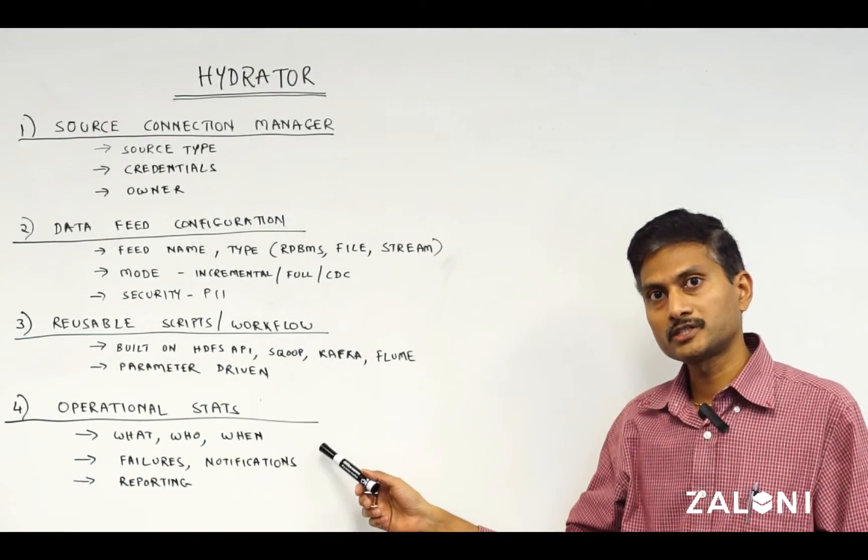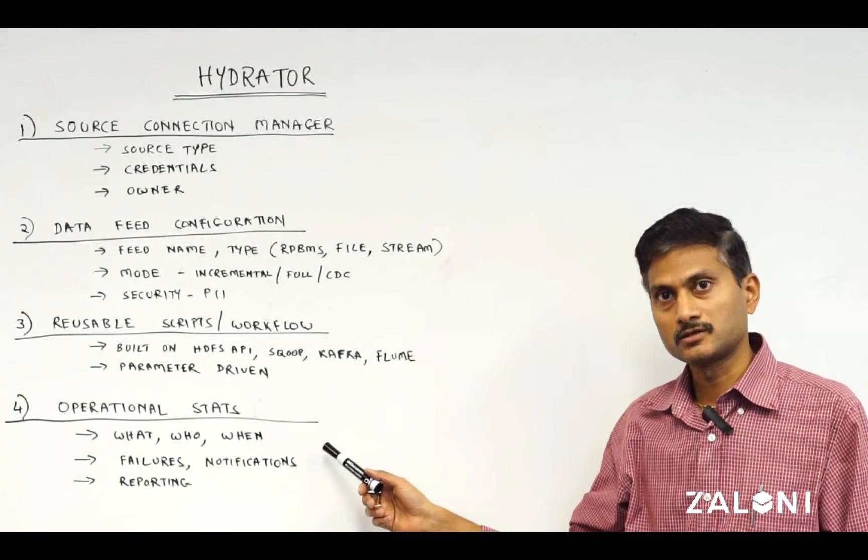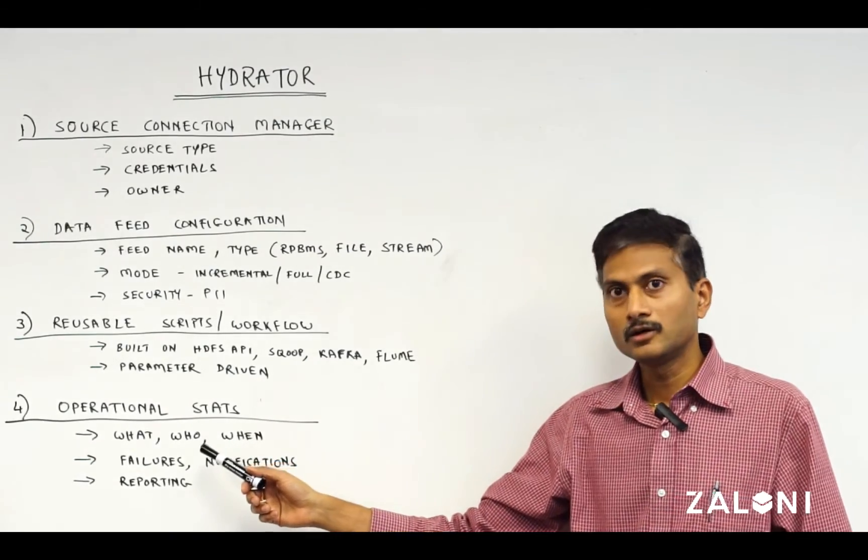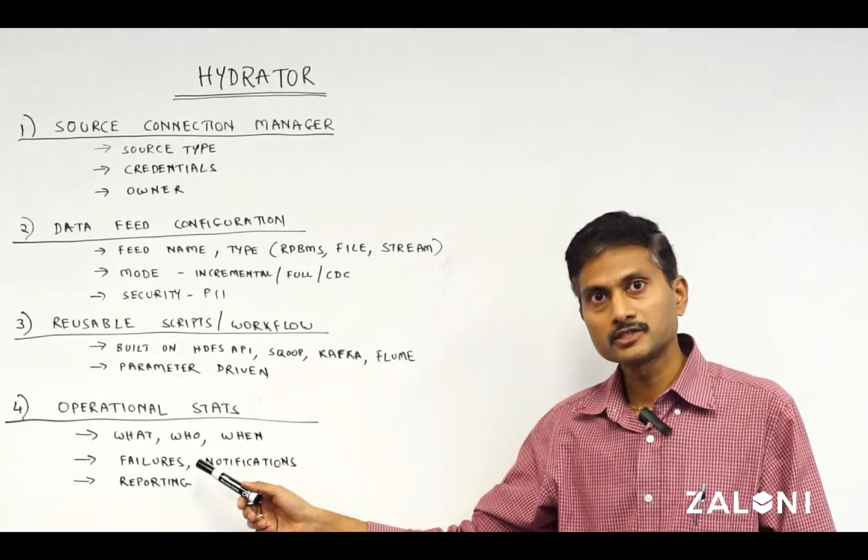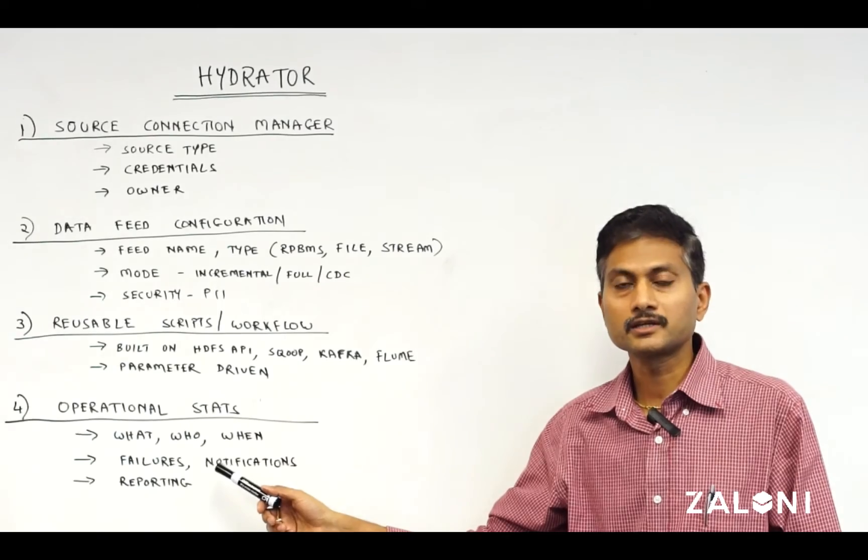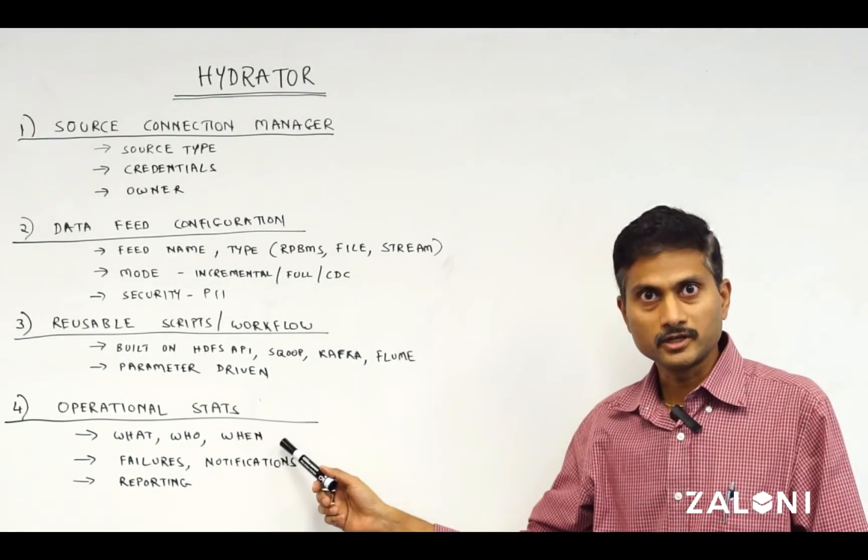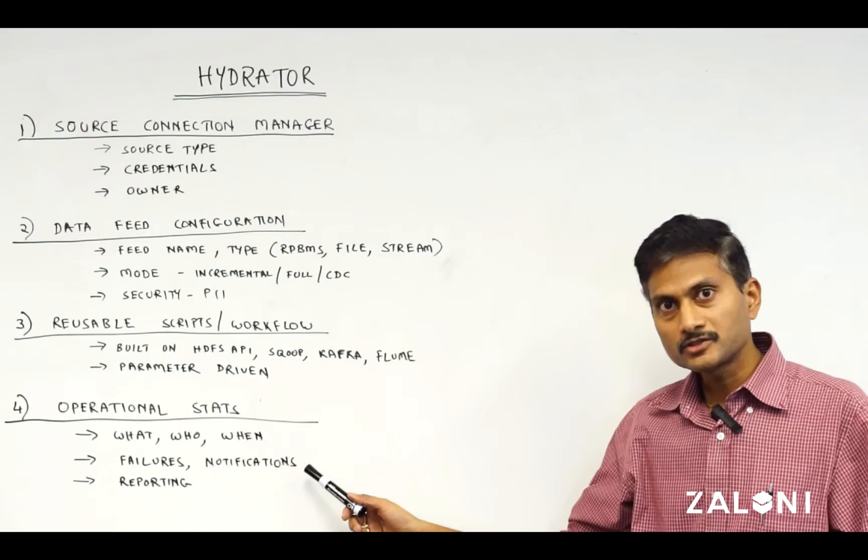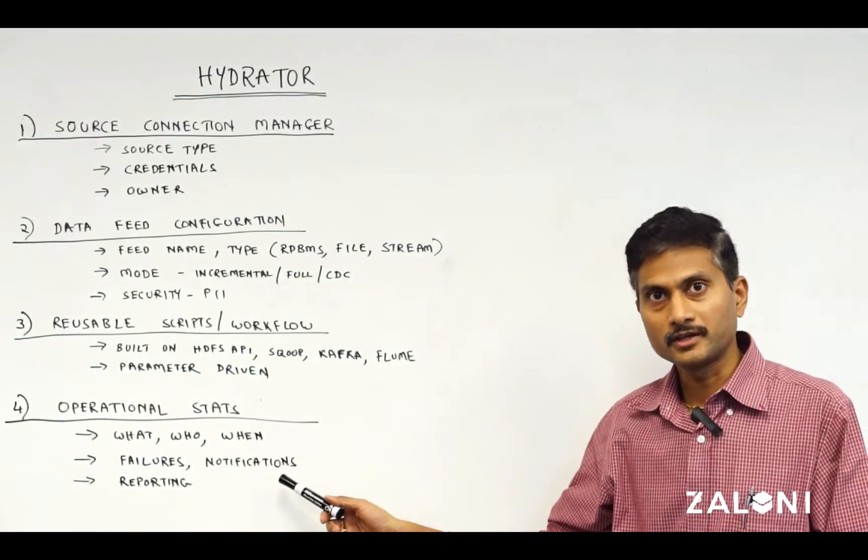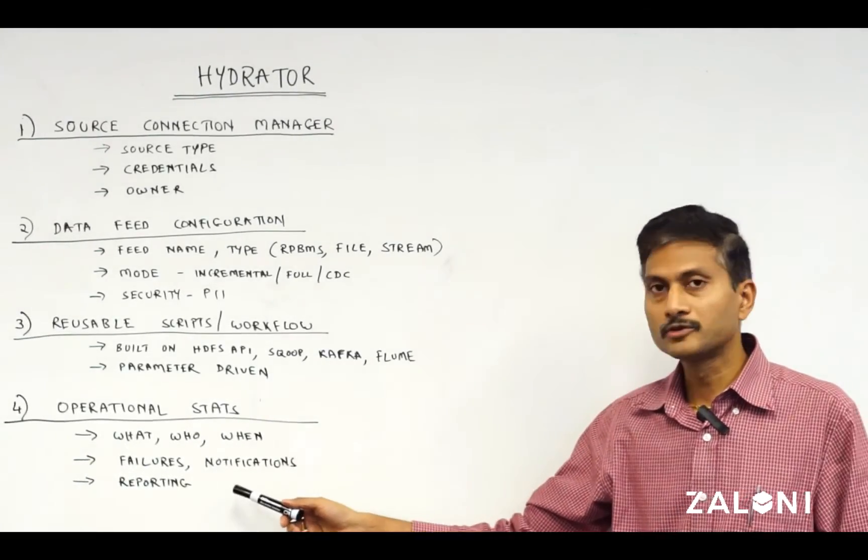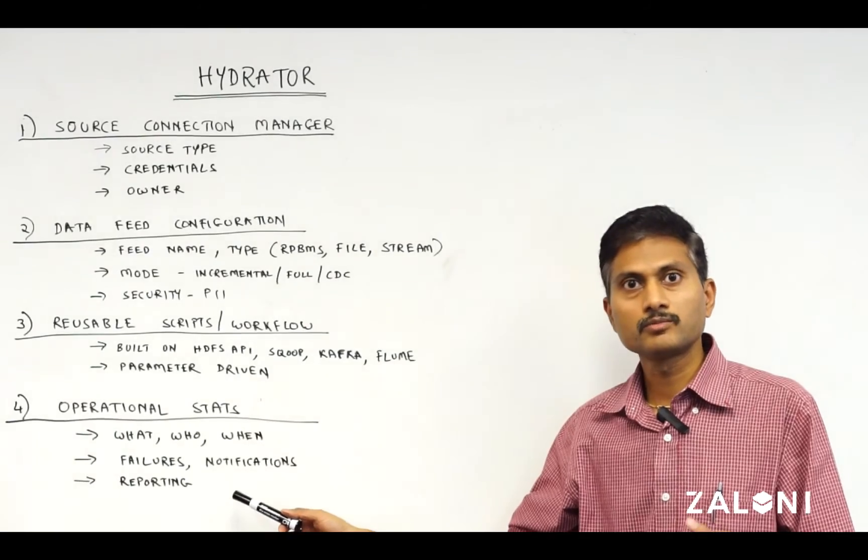Four is the operational collection and stats, which include what is running the ingestion, who is running it, and when did it run. What are the failures, if any, and how do you notify them? And how do you report to see trends and performance?